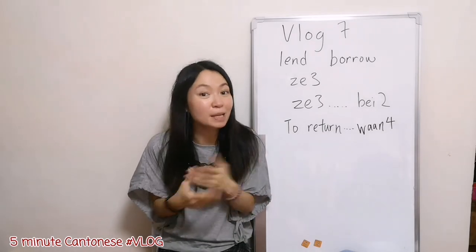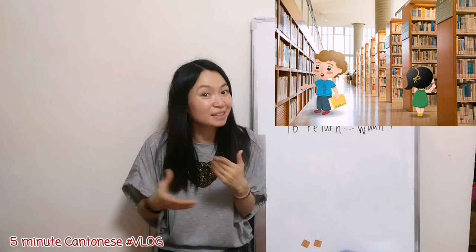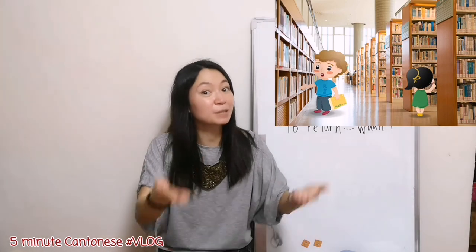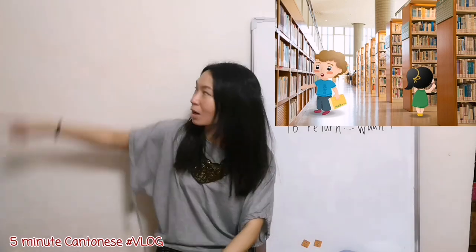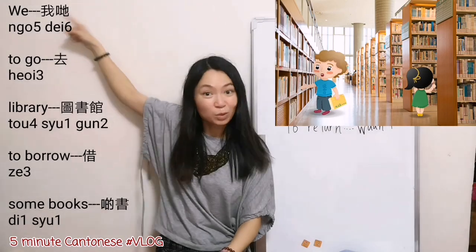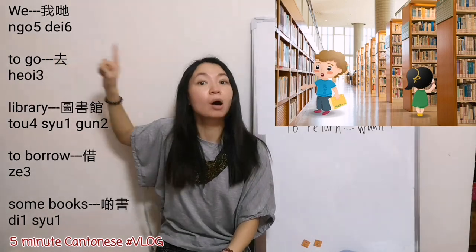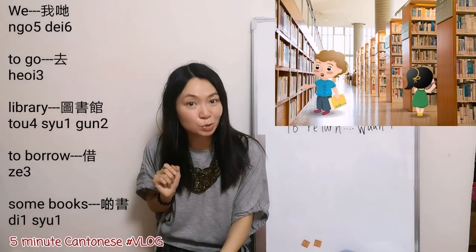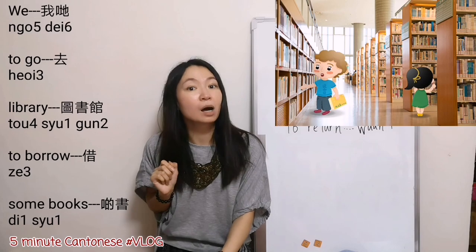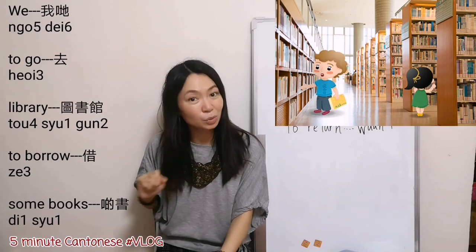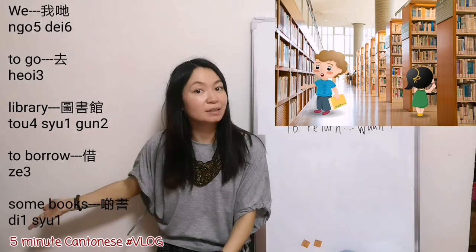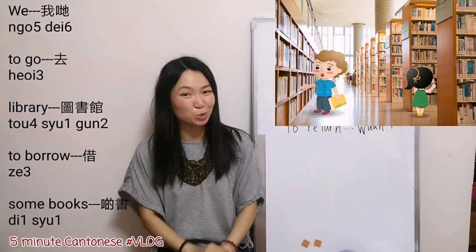How to say 'I borrow some books from the library'? In Cantonese, we don't say it this way. We say we go to the library to borrow some books. 我地 — we — and then to go, 去, library, 圖書館, and then to borrow, 借, some books, 書. 我地去圖書館借書.